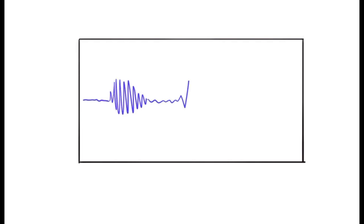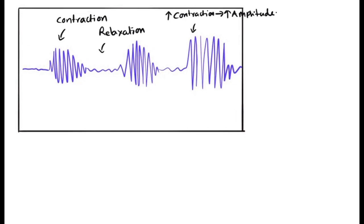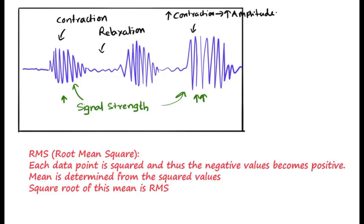Real-time recording of EMG looks like this: contraction, relaxation, contraction, and again contraction. The first one is contraction, the second line is relaxation, and the last bunch of activity is increased contraction, which leads to increased frequency and amplitude. The signal strength of EMG recording depends on the amount of force developed by the muscle fibers.